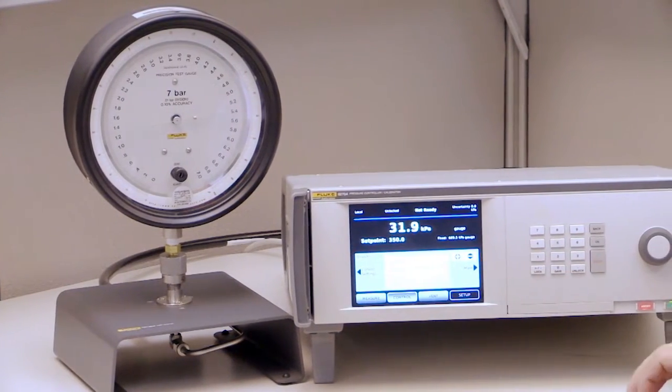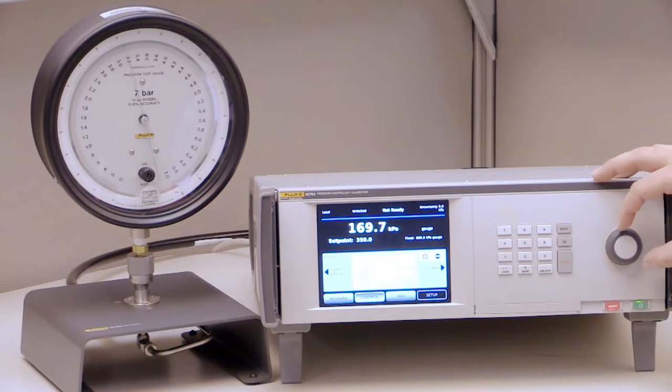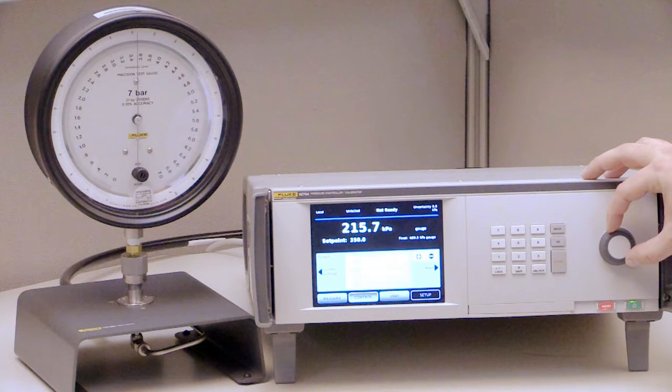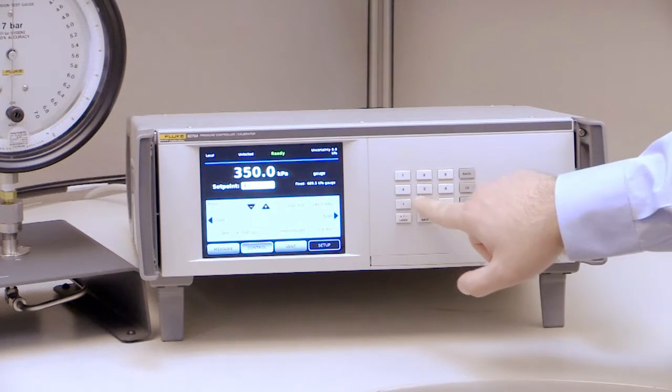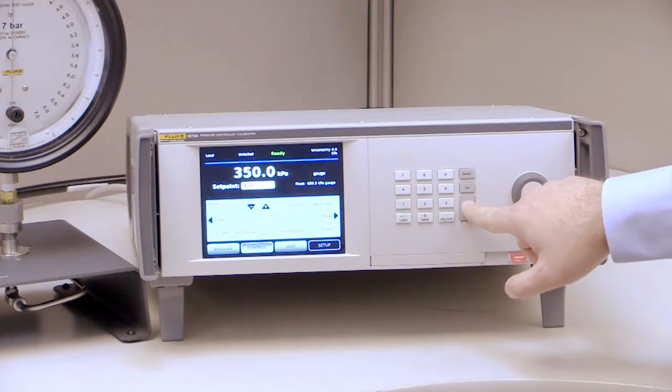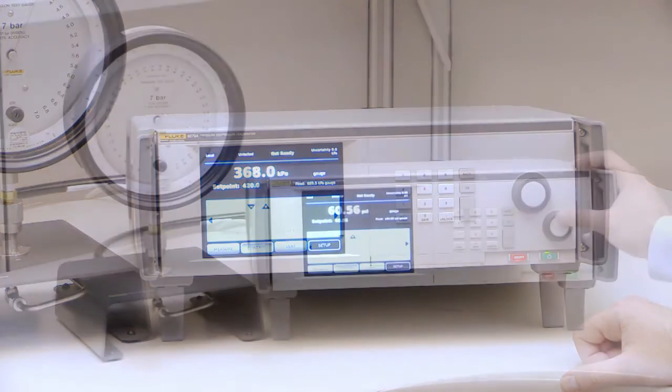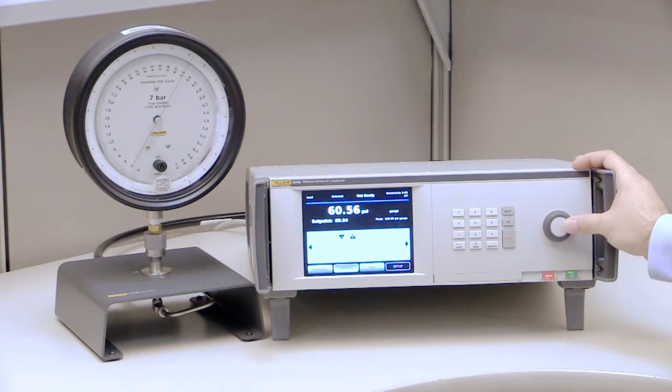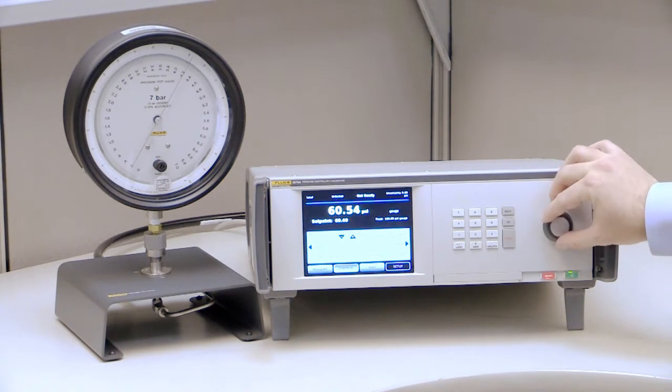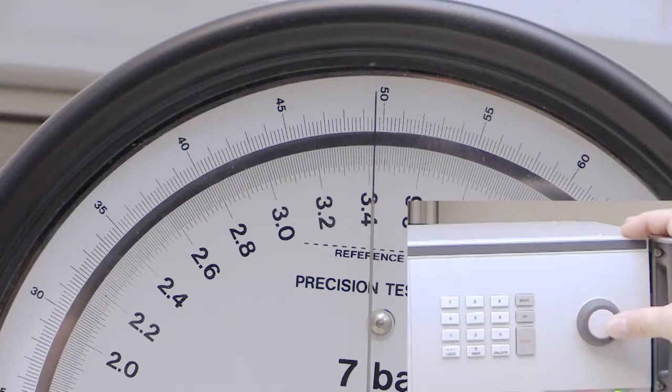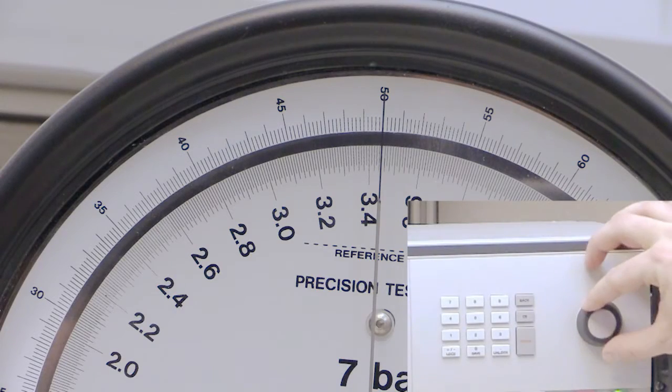The 6270A is easy to learn and use thanks to a graphical user interface and an intuitive hardware design. A simple calculator-style keyboard makes it easy to enter values quickly. The jog wheel lets you make minor pressure adjustments to put the pressure on the cardinal point. This feature is ideal for calibrating analog dial gauges.